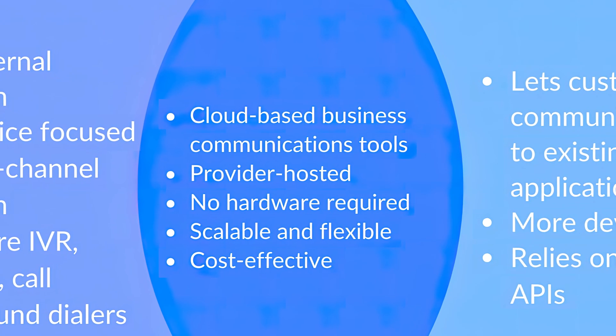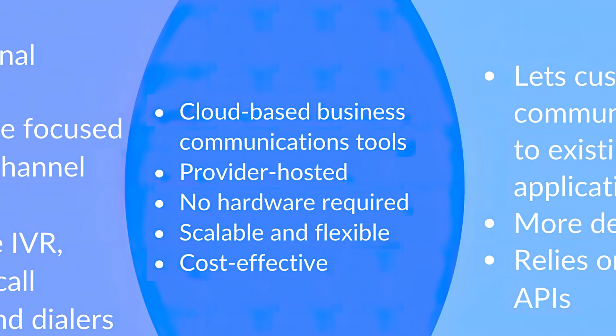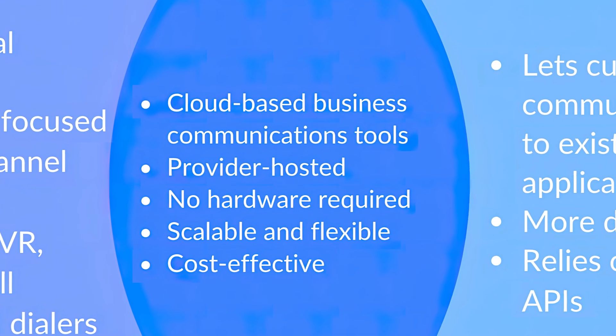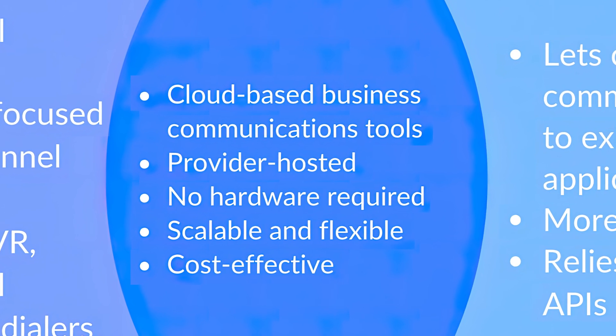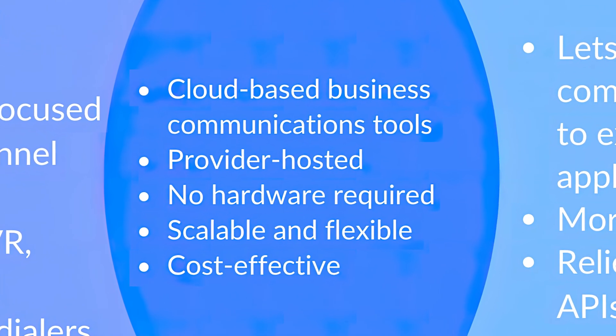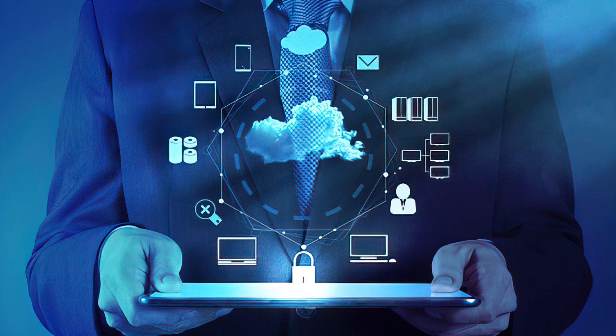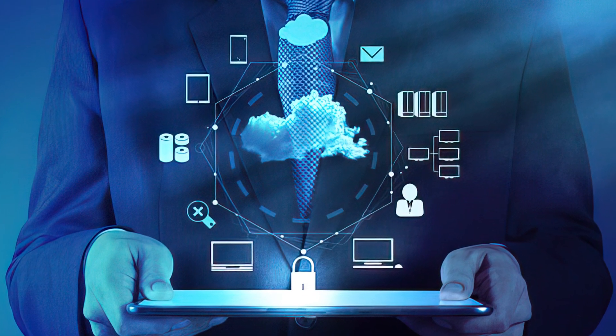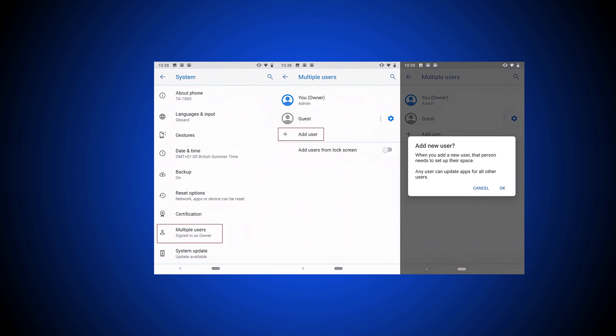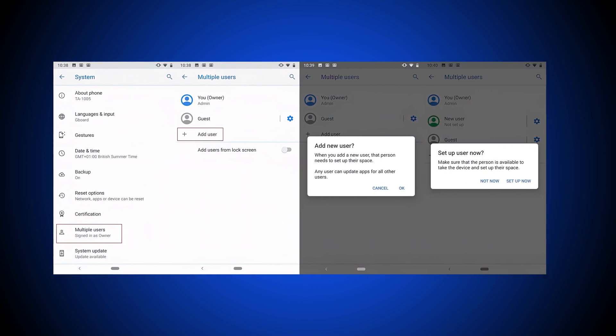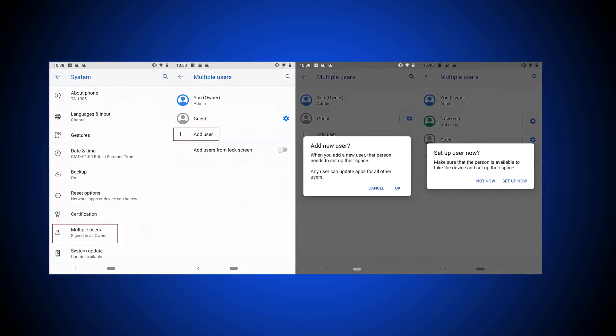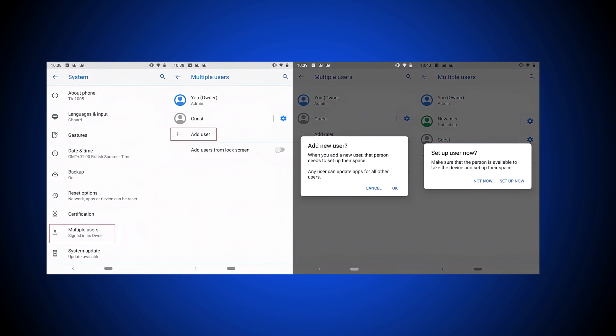Both CPaaS and CCaaS provide cloud-based communication tools, benefit your end users, improve customer experience, and offer more flexibility and scalability than traditional on-premise communication systems. When you use a CPaaS or CCaaS service, the provider has already created the communication functionality. You either program the API code into your application with CPaaS or subscribe to a new software application with CCaaS. In either case, adding new users is as simple as signing up a new employee on your account with the provider, assigning a virtual phone number, and paying the subscription or pay-per-user fee.